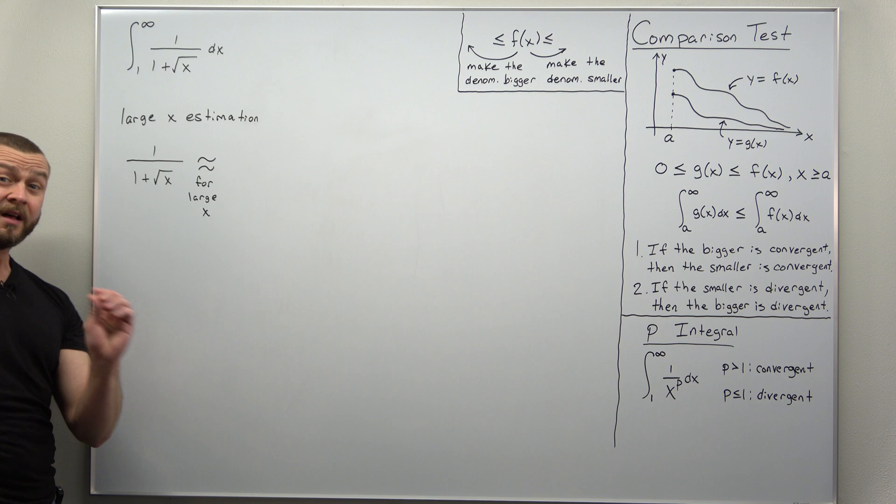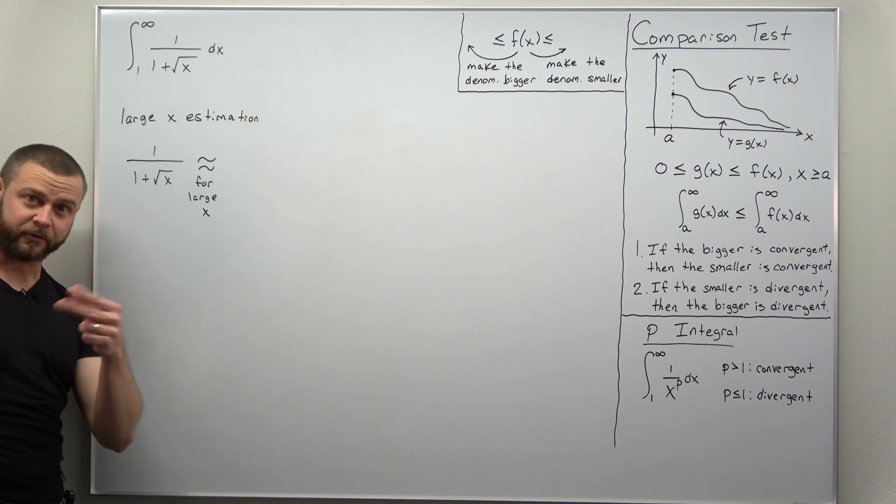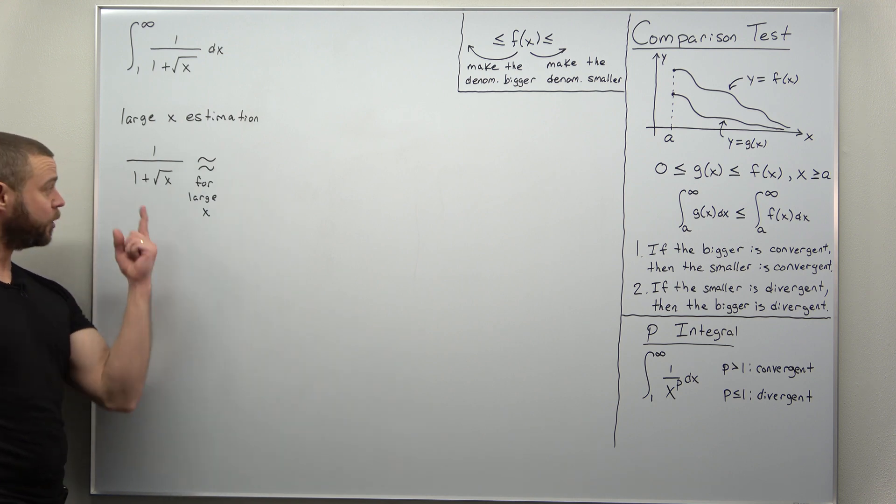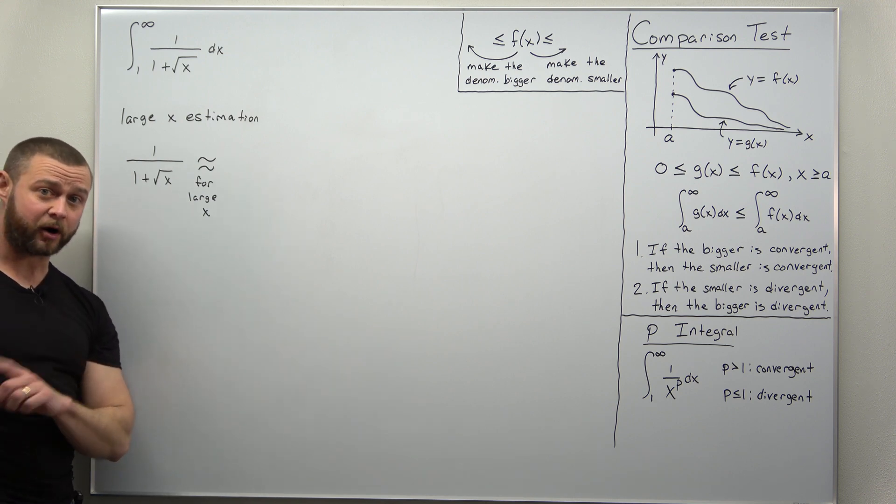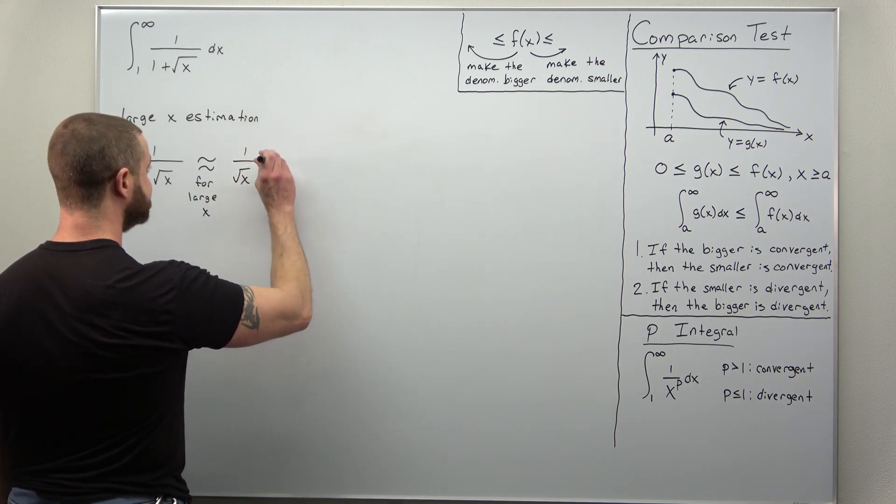In other words, this 1 doesn't really do anything when you have square root of x being added to that for large values of x. So we'll get rid of the insignificant part, 1. This function behaves like 1 divided by square root of x.